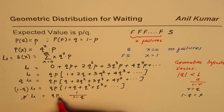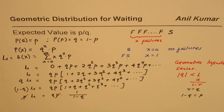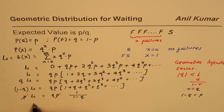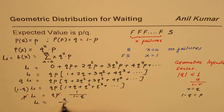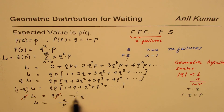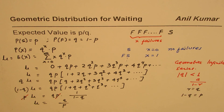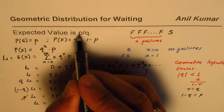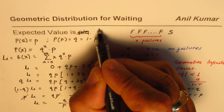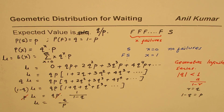Now 1 minus Q equals P, so we have P times mu equals QP over P. The P cancels, giving mu equals Q over P. So the expected value — the mean number of failures — is Q over P, which is what we set out to prove.